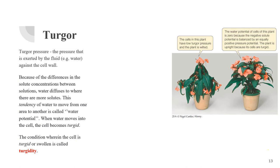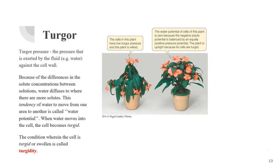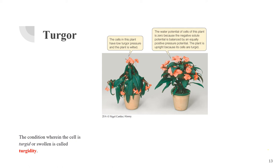Turgor pressure is the pressure exerted by fluid against the cell wall. The pressure in a liquid at rest can be measured by the density of the liquid, the acceleration of gravity, and the depth of the fluid column. When the pressure from the fluid involves water as a result of influx across a semi-permeable membrane, it is referred to as osmotic pressure. Because of differences in solute concentrations between solutions, water diffuses to where there are more solutes. This tendency of water to move from one area to another is called water potential. When water moves into the cell, the cell becomes turgid. The condition where the cell is turgid or swollen is called turgidity. Turgor is what makes living plant tissue rigid, and loss of turgor resulting from the loss of water from plant cells causes flowers and leaves to wilt.